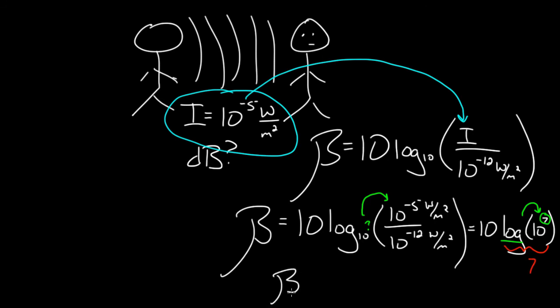So my final answer, beta, the loudness, the number of decibels is going to be 10 times log of 10 to the seventh was just seven, because I had to raise 10 to the seventh to get 10 to the seventh. So 10 times seven equals 70, I'm yelling at 70 decibels, I need to calm down, my friend's going to start getting mad at me. That's how you figure out how loud the sound wave is.